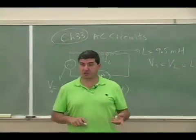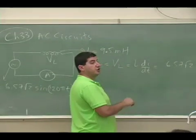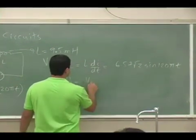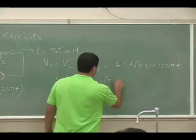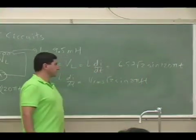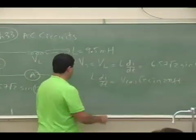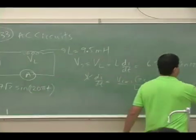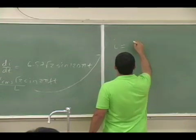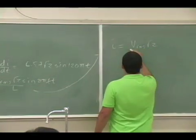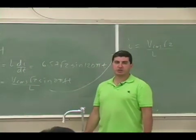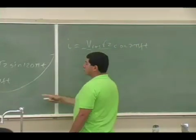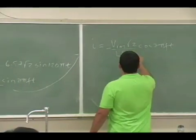From here we can calculate the current in the circuit as a function of time. Writing the general equation: the source voltage is V_rms times root 2 times sine of 2πft. L goes to the denominator and we integrate both sides to get the current. The integral of sine of 2πft gives negative cosine of 2πft, with 2πf coming to the denominator.